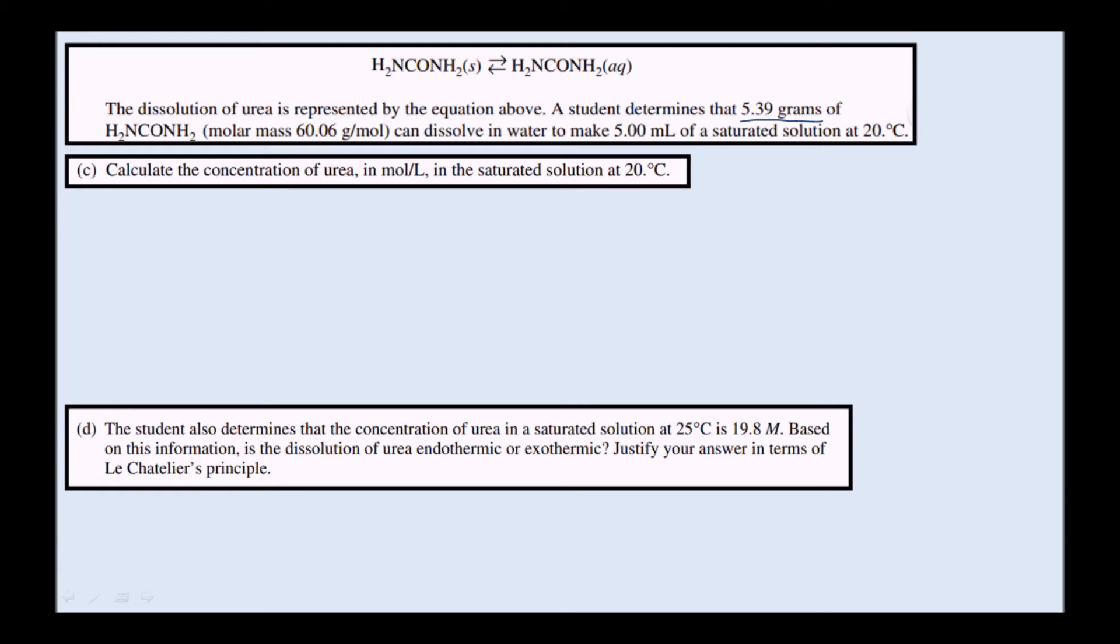To get the concentration of urea, we need to have the moles of urea over the volume. So we have 5.39 grams of urea, and we can multiply that by the molar mass, which is provided right here: 1 mole over 60.06 grams. You multiply that out and you get 0.0897 moles urea.